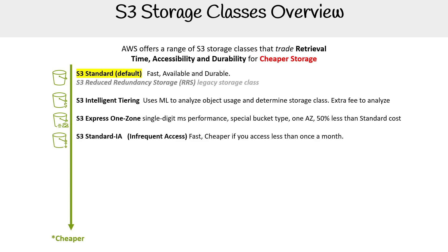We have S3 Standard IA — IA stands for Infrequent Access. Anytime you see IA, think that there is an additional retrieval fee, because there always is. It's just as fast as S3 Standard, but cheaper if you're not going to be accessing your data often — roughly once a month or less is when you'll save money. It's not exactly archiving, but somewhere in between. There's an extra fee to retrieve and it's 30% less than Standard, with reduced availability.